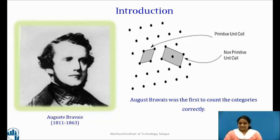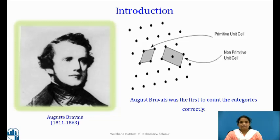Auguste Bravais was a French physicist known for his work in crystallography and best remembered for his 1848 discovery that there are 14 unique lattices in three-dimensional crystalline systems. Bravais introduced the concept of space lattices in the study of crystal structures.